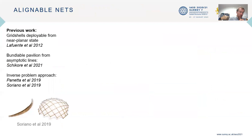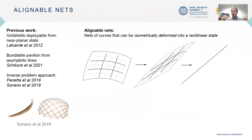The closest references in the literature rely on iterated optimization loops, so they are quite slow to use for design purposes and quickly difficult to implement. We propose a simpler approach based on alignable nets, which are defined as nets of curves that can be isometrically deformed into rectilinear states.